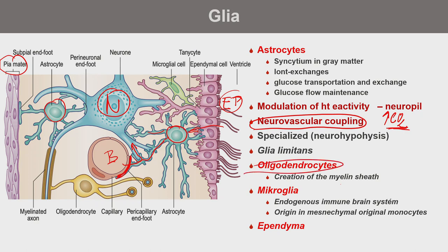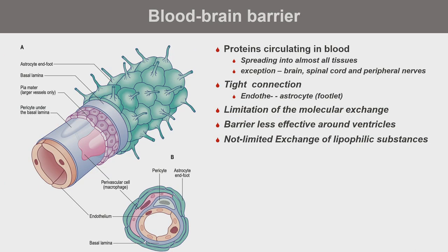Oligodendrocytes form myelin sheaths — one oligodendrocyte can myelinate multiple fibers. Ependyma will be discussed in the ventricular system section. Astrocytes are very important in the blood-brain barrier. The blood-brain barrier is extremely important because proteins — whether our own (e.g., albumin) or foreign proteins during infection — circulate in blood and spread into almost all tissues, except the central nervous system and peripheral nerves.